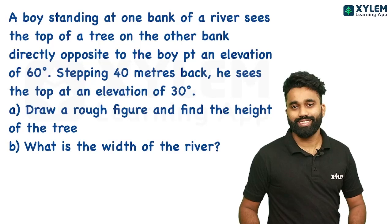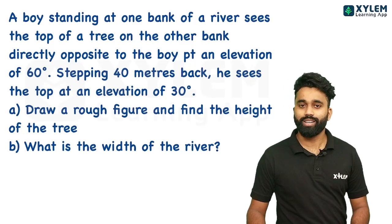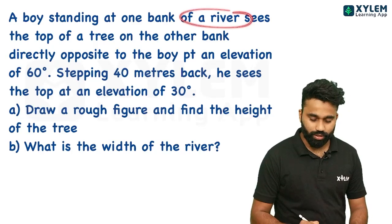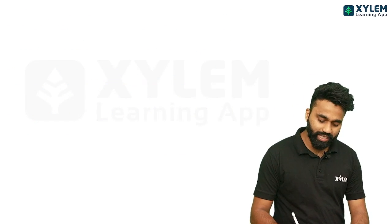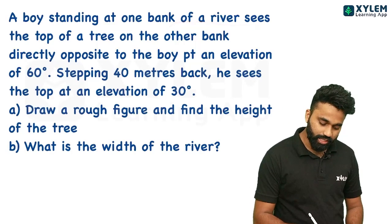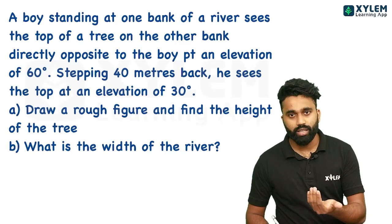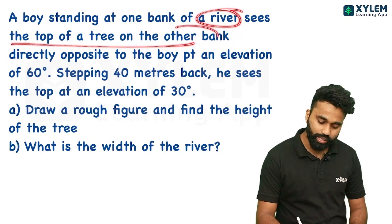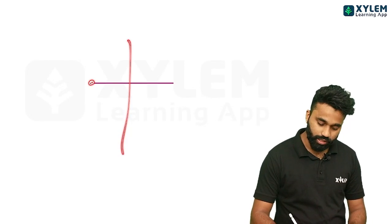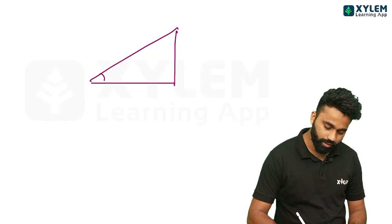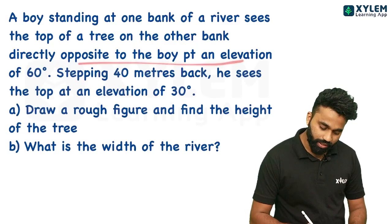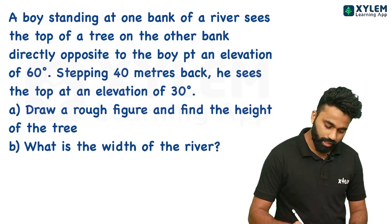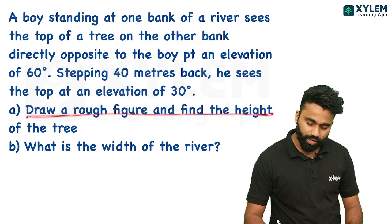For the next question, ask and answer. I'm doing this important lesson in class. A boy is standing at one bank of a river. He can see the top of a tree on the other bank. If you are standing at one bank of a river, you can see the top of a tree on the other bank.